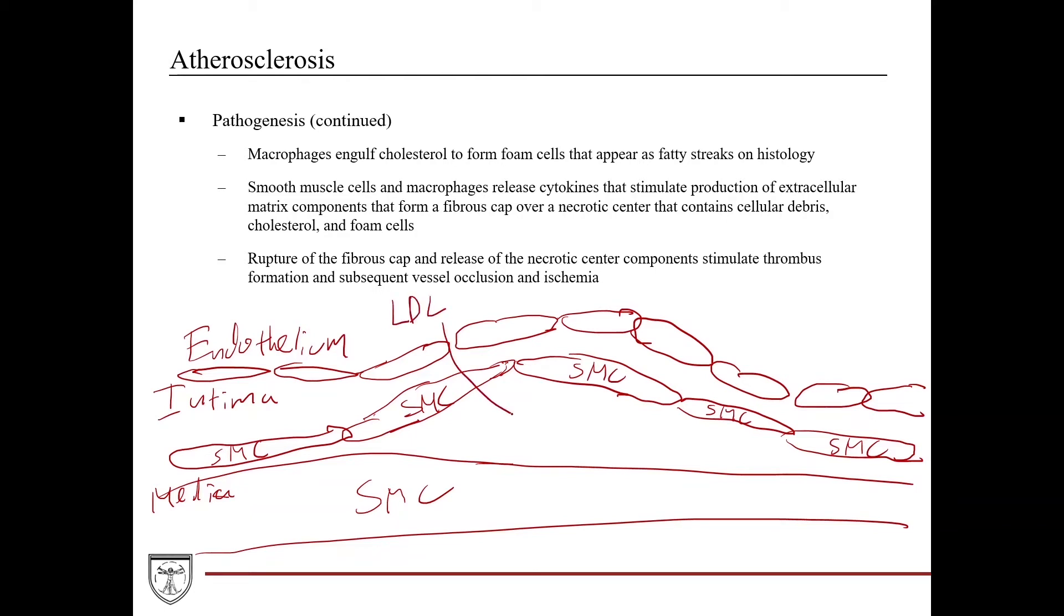So what happens is, is you have LDL that comes in. And it's these collections of cholesterol like this, which then get engulfed by the macrophages. And these are what form foam cells. And they appear as fatty streaks on histology. And so the smooth muscle cells plus these foam cells release cytokines that stimulate production of extracellular matrix components that form a fibrous cap over a necrotic center that contains cellular debris, cholesterol, and foam cells. And so what you have is this ECM matrix around here like this.